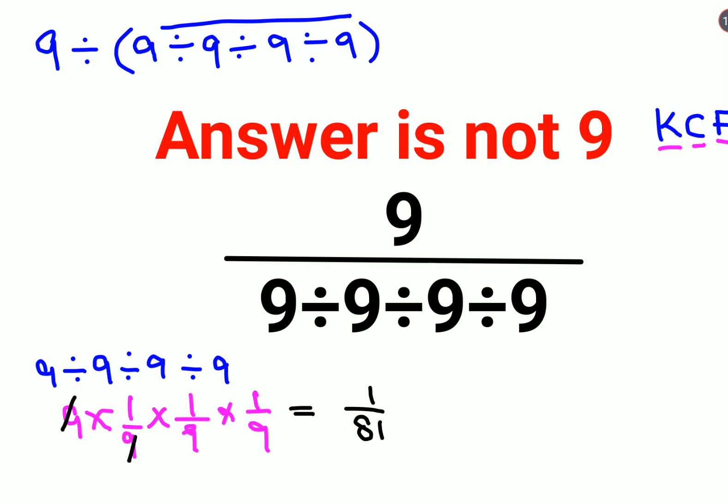So now your entire question has changed to 9 divided by 1 upon 81. Using the same rule of KCF we keep the 9 as it is, change the division sign to multiplication and take the reciprocal of 1 upon 81 that is 81.